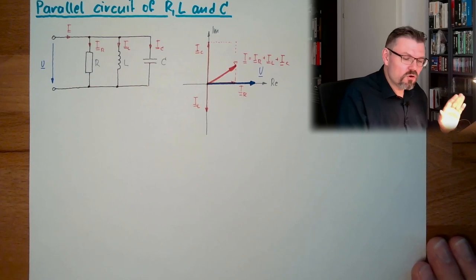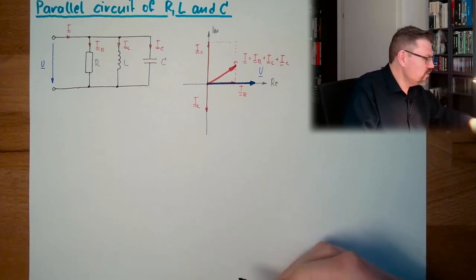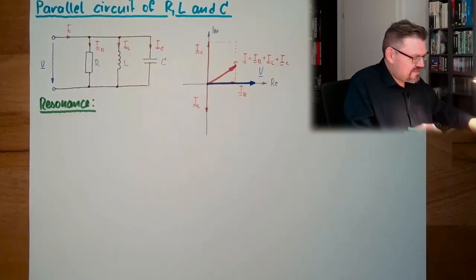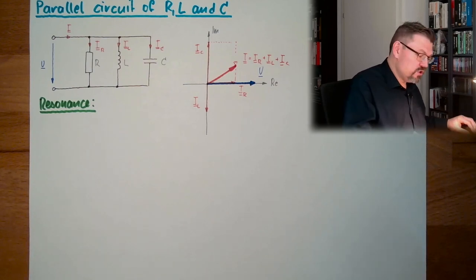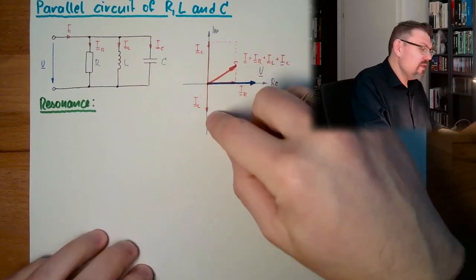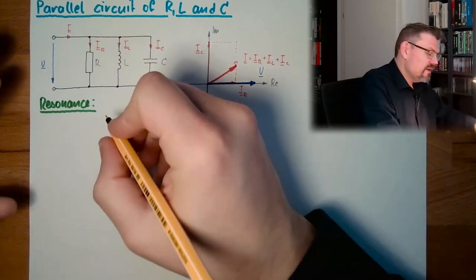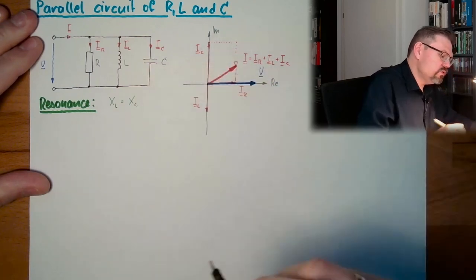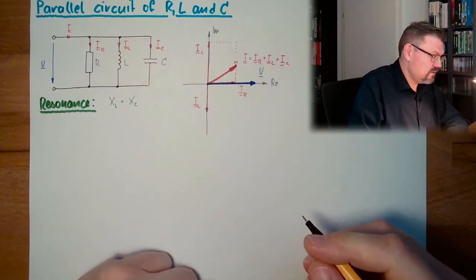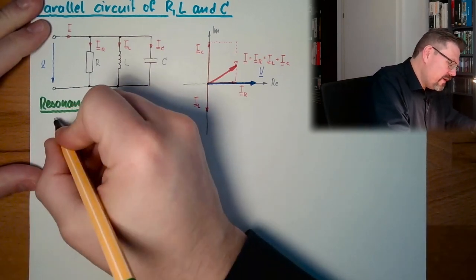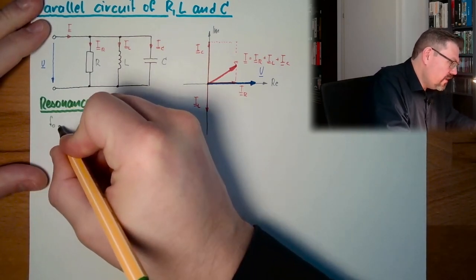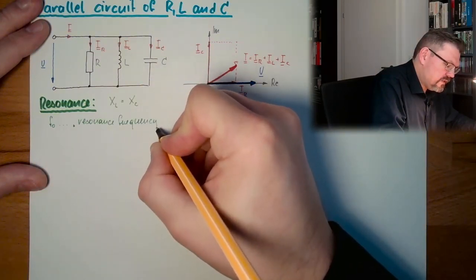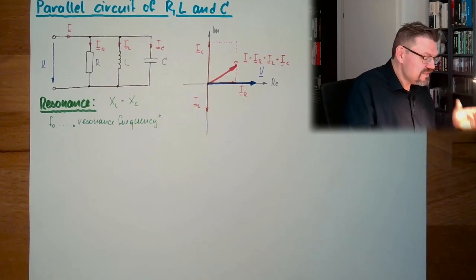This is also called resonance. So we also have a resonance here. What is the condition that both are equal? It's the same condition as we had last time: that the reactance of L and C are the same. And this can only happen at a certain F0, at a certain resonance frequency. Only at this frequency is this happening.